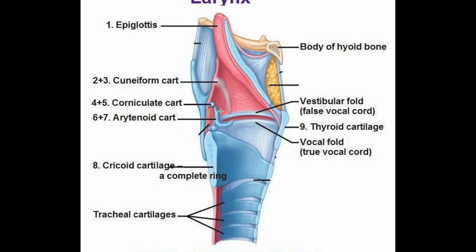An important clinical point: the inferior surface of the larynx is lined by pseudostratified ciliated columnar cells. There is an important exception — the true vocal cords are lined by stratified squamous epithelium.